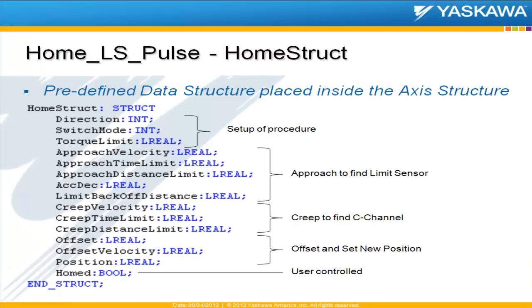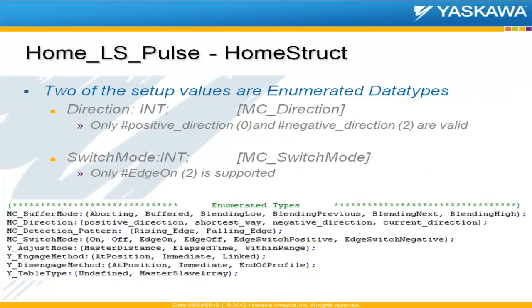A little more about the home structure. Inside the home struct — which is also placed inside the access structure — you have things for setup, which is direction and switch mode. You have your approach configuration, your creep configuration, and your offset to new position configuration. There's also a bit in here for 'homed.' This is all user controlled, so the function block does nothing with it. It's for external use, typically on a power-up that requires homing — you'd initialize it to false, and then at the end of the procedure the user program would set it to true.